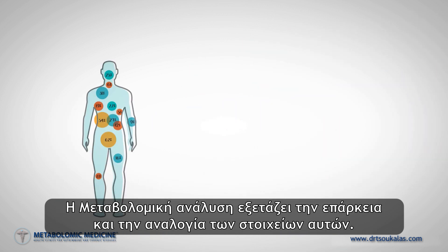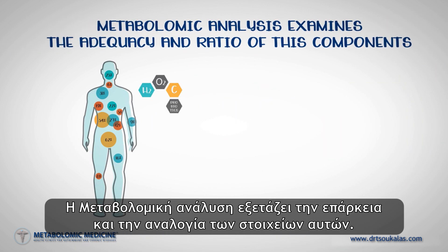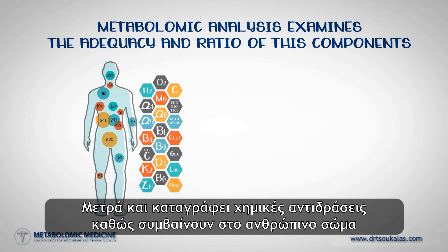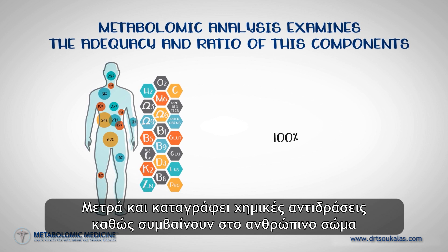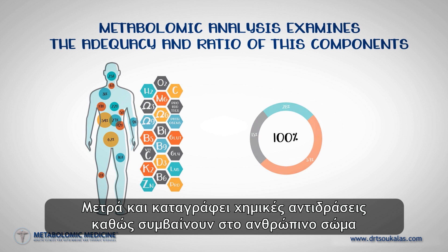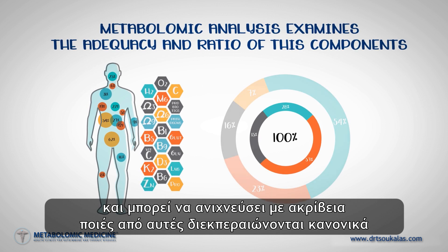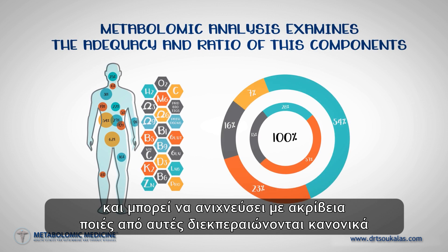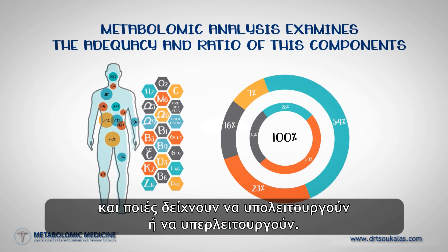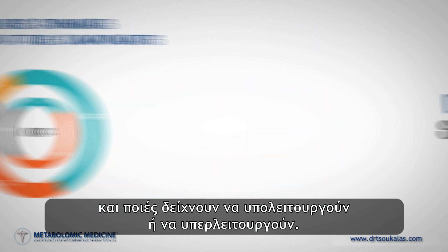Metabolomic analysis examines the adequacy and ratio of these components. It measures and records chemical reactions as they occur within the human body and can detect with precision which of those reactions progress normally and which seem to under or overperform.